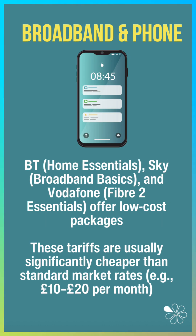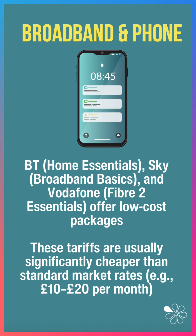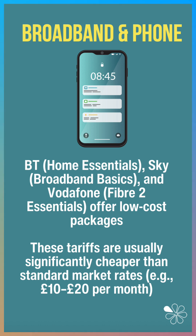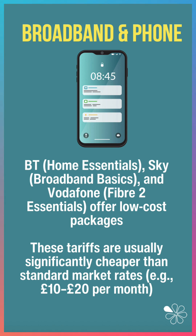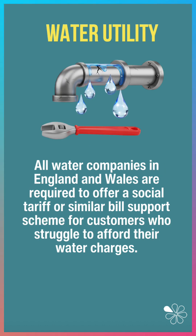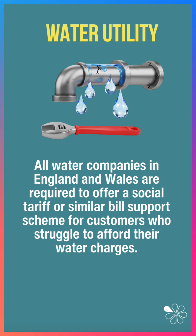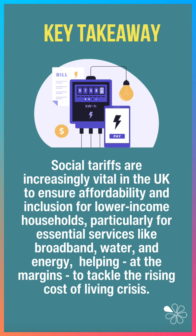For example, in the broadband sector, BT, Sky, Virgin Media, and Vodafone all offer low-cost packages for people on income support, and these tariffs are usually significantly cheaper than the standard market prices. All water companies in England and Wales are required to offer social tariffs or similar bill support for people who are struggling to afford their water bills.